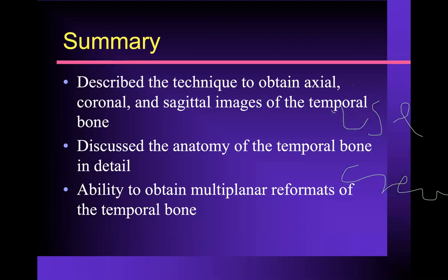In summary, I've described the anatomy for you. We talked about the technique to obtain axial, coronal, and sagittal images of the temporal bone. We also talked about MRI protocol for temporal bone imaging. We went through the anatomy of the temporal bone in detail, going from the outside in — EAC, middle ear cavity, inner ear — and talked about the IAC and facial canal, and the ability to obtain multi-planar reformats to help evaluate pathology better. I'd like to thank Dr. Wagner for inviting me to speak today.